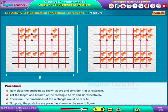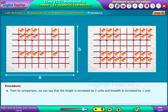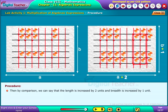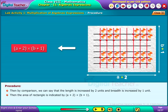Suppose the pushpins are placed as shown in the second figure. Then, by comparison, we can say that the length is increased by 2 units and breadth is increased by 1 unit. Then the area of rectangle is indicated by (A + 2) by (B + 1).